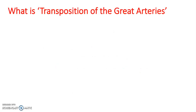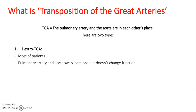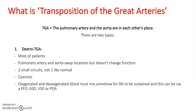So what is transposition of the great arteries? This is when the pulmonary artery and the aorta are in each other's place. There are two types of TGA. Dextro-TGA, which is most common — this is when the pulmonary artery and the aorta swap locations but don't change function. There are two small circuits, not one like normal, and this can lead to cyanosis. Oxygenated and deoxygenated blood must mix somehow for life to be sustained, and this can be via a PFO, ASD, VSD, or PDA.